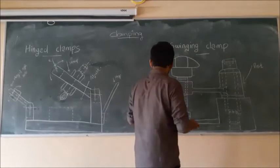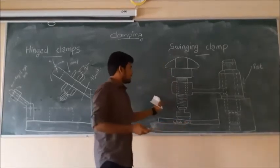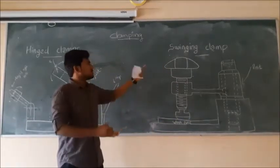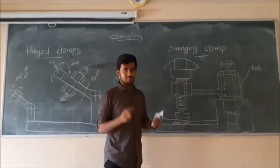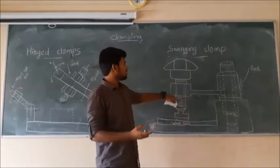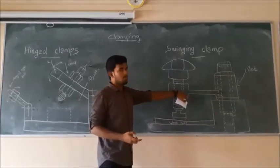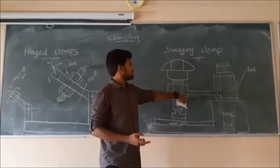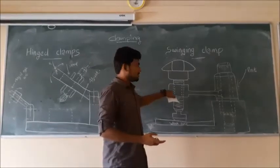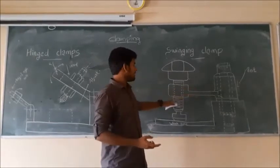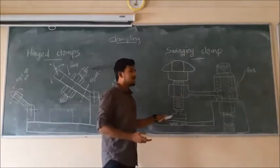Next, we move to another particular disadvantage of swinging clamp. It has friction. As you know, the arm has a movement, then there exists a friction against the motion. This can be controlled by providing a washer.